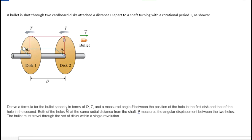Derive a formula for the bullet speed in terms of d, T, and the measured angle theta. Let's note, theta is the angular distance between the two holes. If the bullet goes through here, disc one, this disc two must have traveled through an angle theta for the bullet to go through it as well. And it has to have traveled through this angle theta in the same amount of time that took the bullet to come through distance d.